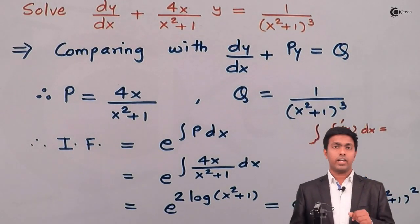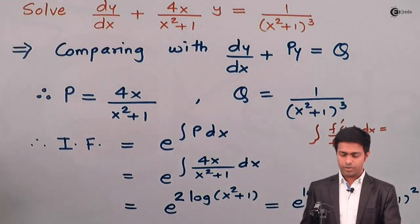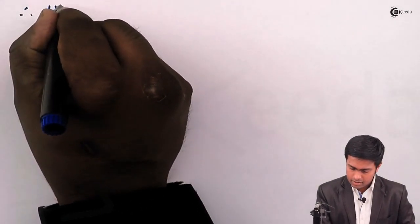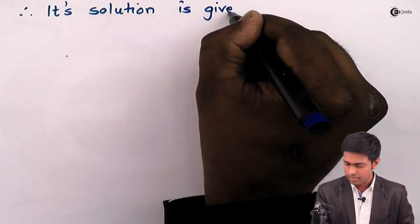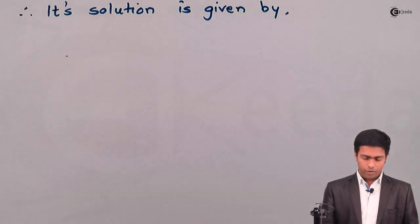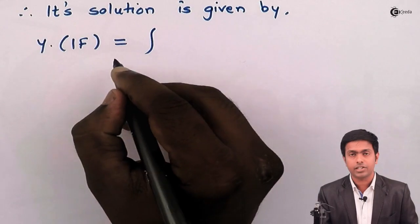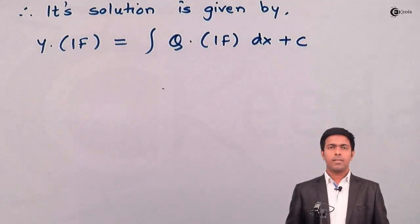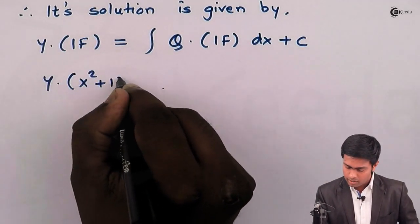I am going to use this integrating factor to find the solution of this linear differential equation. Therefore its solution is given by the formula: y × (integrating factor) = integration of Q × (integrating factor) dx + C. Substituting the values: y × (x² + 1)² equals the integration of Q...